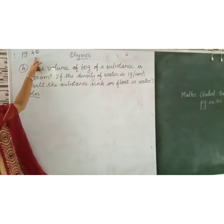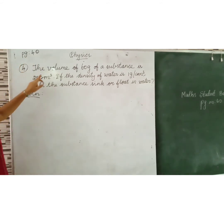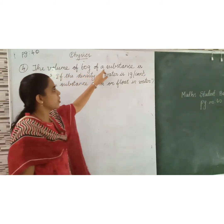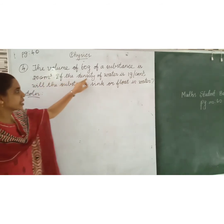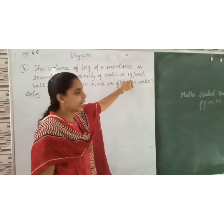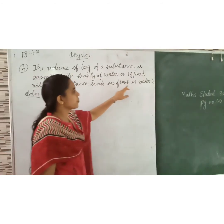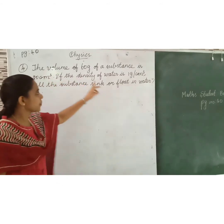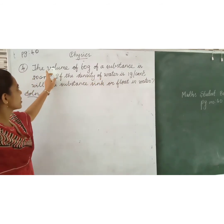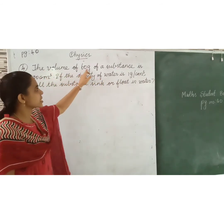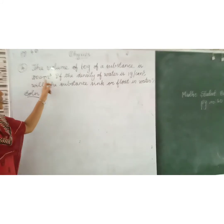Next question — this is the exercise question from page number 40, question four. The volume of 60 gram of a substance is 20 centimeter cube. If the density of water is 1 gram per centimeter cube, will the substance sink or float in water?